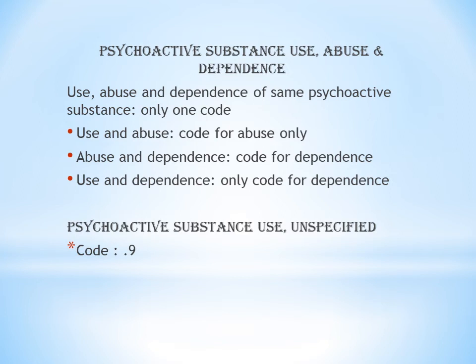When psychoactive substance use is unspecified — meaning use, abuse, or dependence is not clearly specified — assign the unspecified code. The 4th or 5th character for unspecified is typically 0.9.